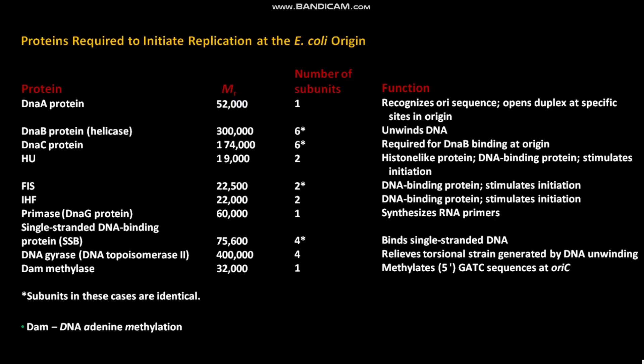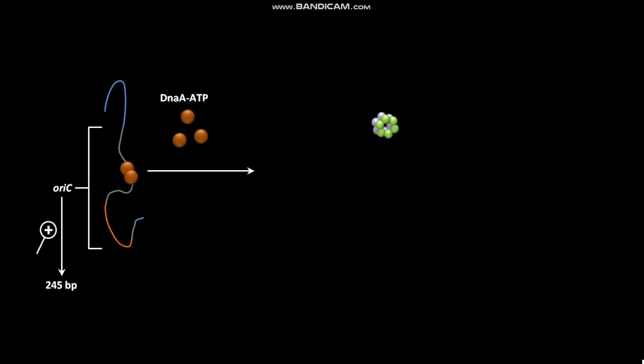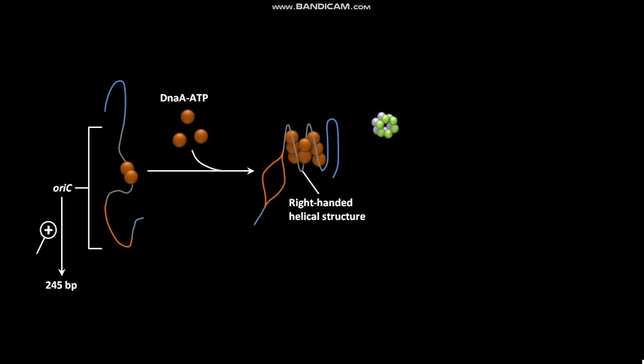These are the proteins required to initiate replication at the E. coli origin. The E. coli has an OriC consisting of two fortified base pairs with R sites and I sites. During initiation of replication, first, eight DnaA·ATP complexes bind at the R sites and I sites in the OriC. After this binding, the DNA is wrapped around this DnaA·ATP complex, forming a right-handed helical structure. The adjacent DNA binding imparts a strain, and due to this strain, the AT-rich DUE region is denatured.